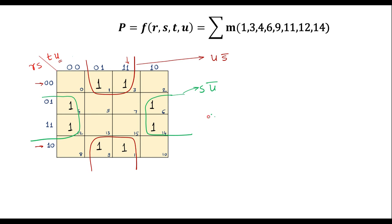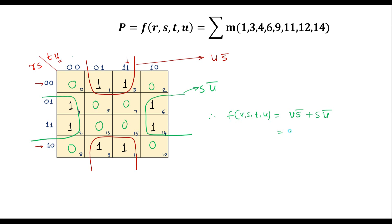In these cells, by default, the other entries in the remaining cell numbers are 0. So therefore, I can write: F(R, S, T, U) = U·S̄ + S·Ū, which is nothing but S XOR U. Thus we have simplified this expression using a four variable KMAP. Thank you for watching.